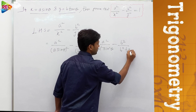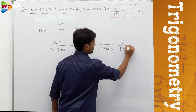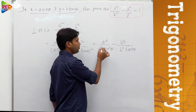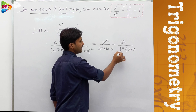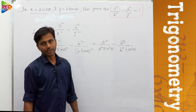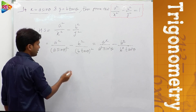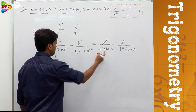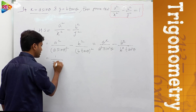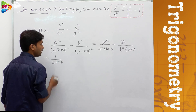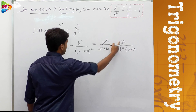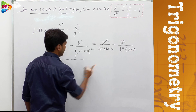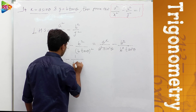Now a² cancels in the numerator and denominator, and b² cancels in the denominator and numerator. What is left is 1 over sin²θ minus 1 over tan²θ.